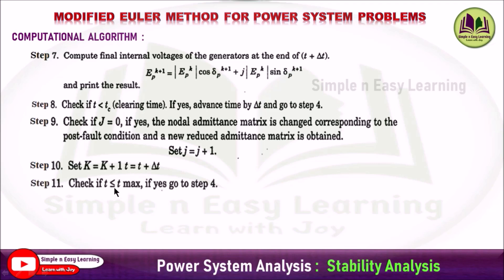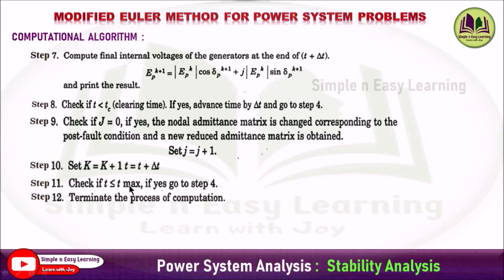After setting k equal to k plus 1, check once again whether t is less than or equal to t-max, the maximum time. If yes, go to step 4 and find the state derivative. If t is greater than t-max, terminate the process of computation. This is the computational algorithm of the modified Euler's method for the power system problem.